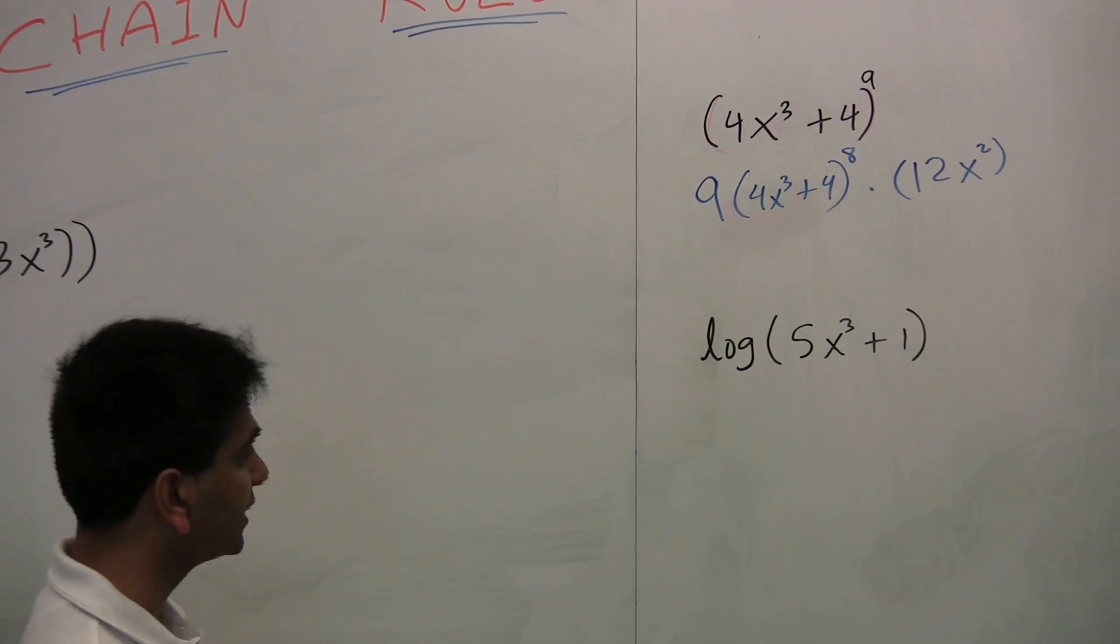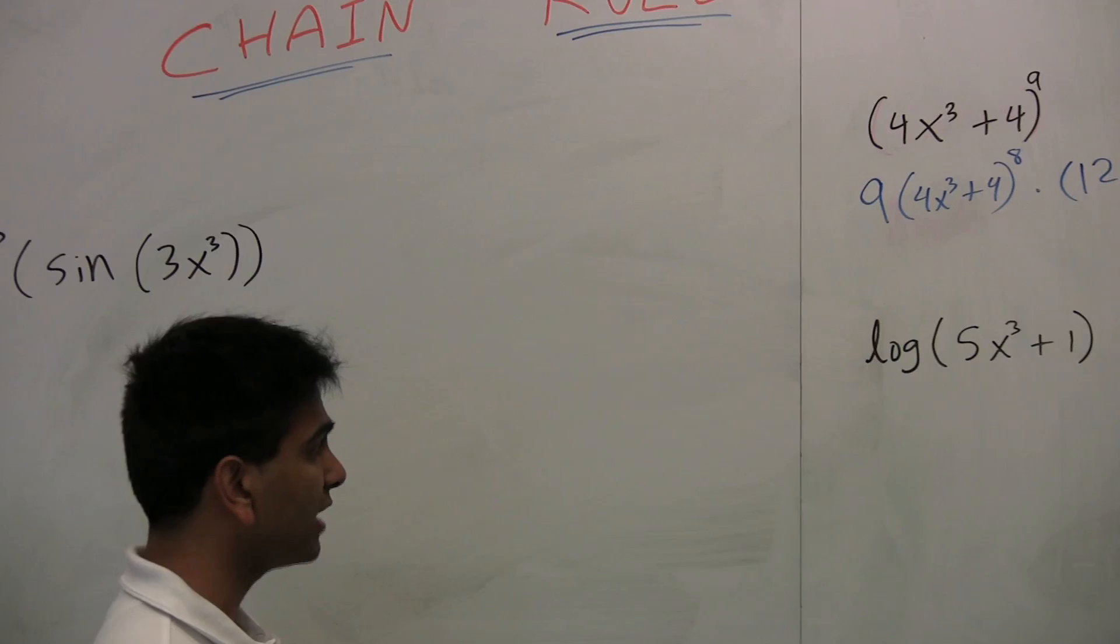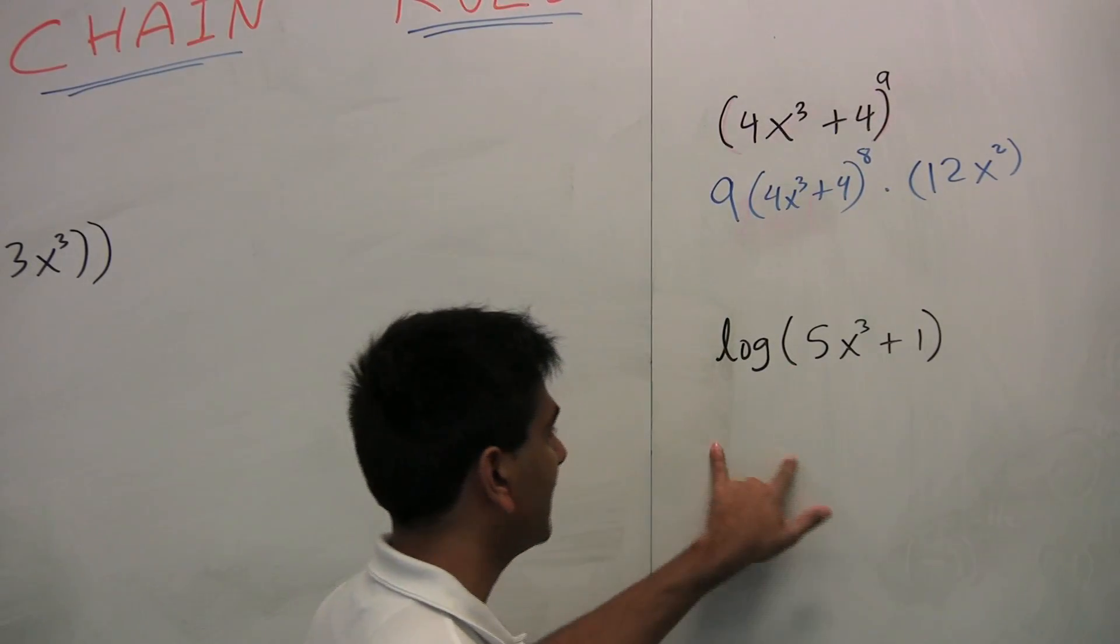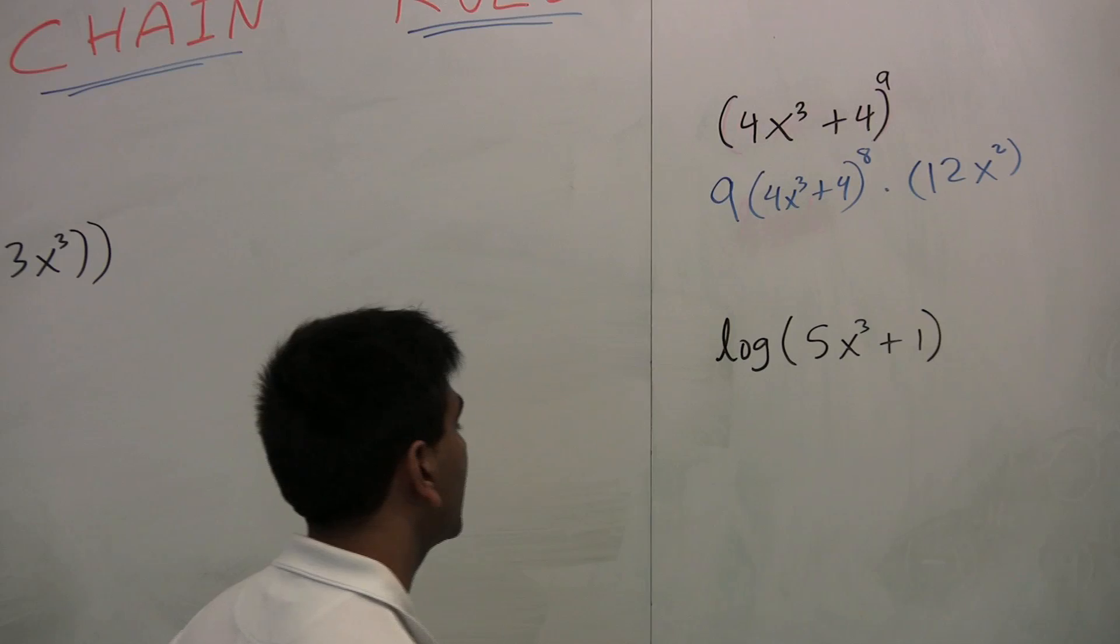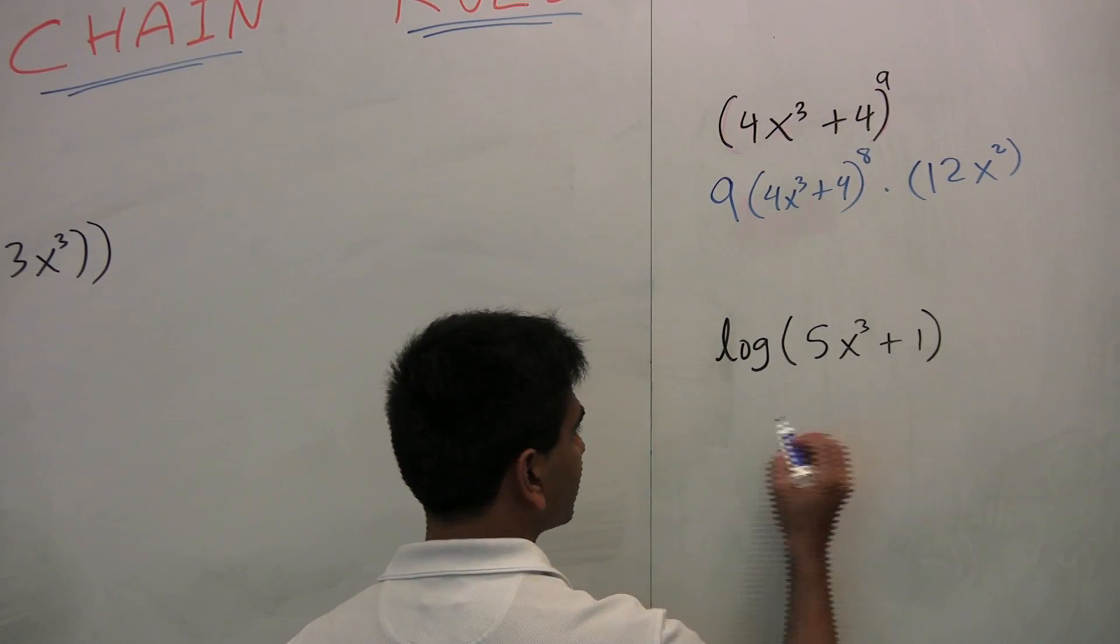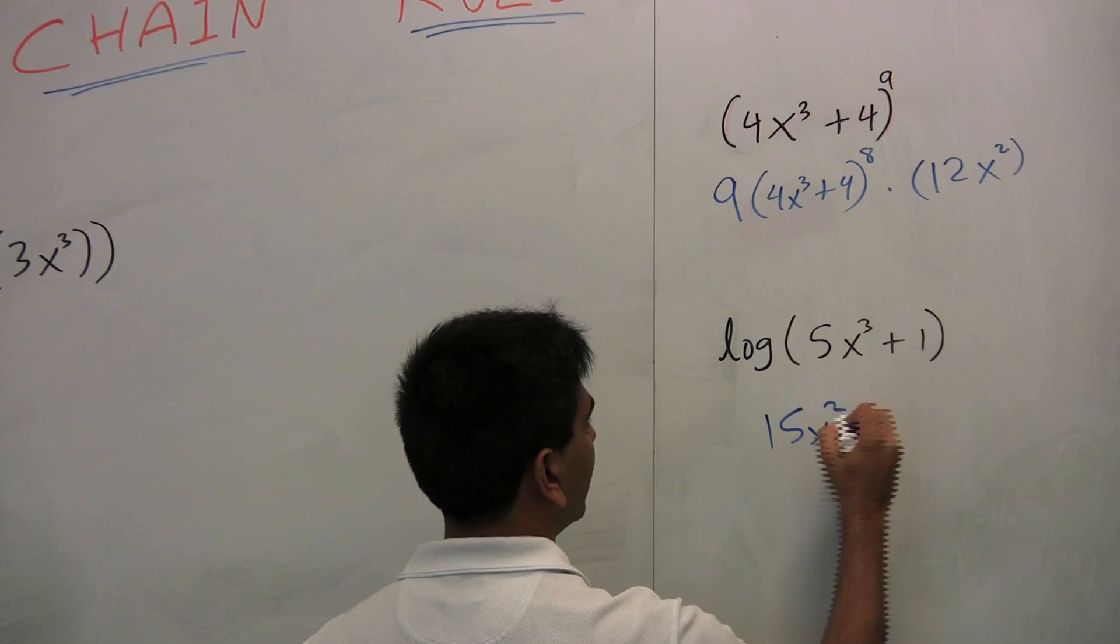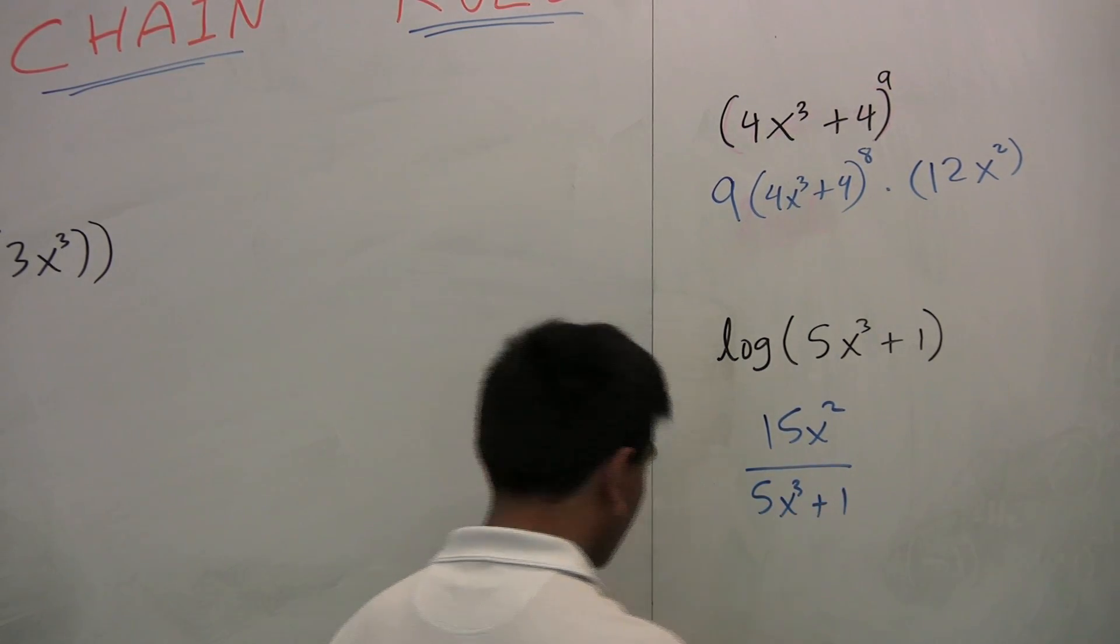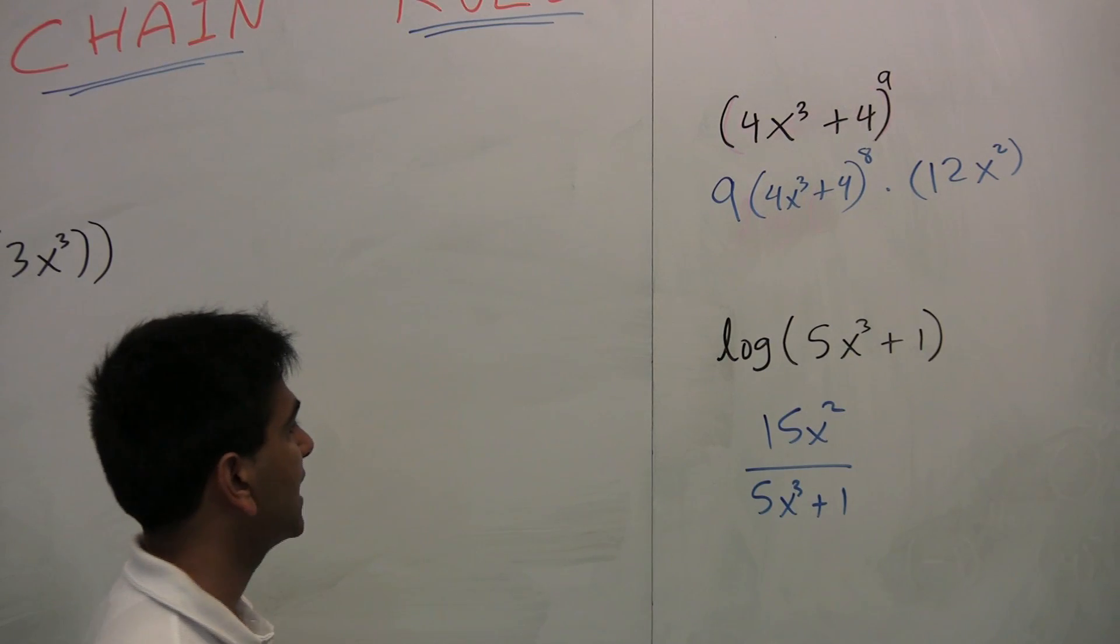Now let's look at this guy. Now we learned in the previous video that log functions, their derivative is just derivative of this guy divided by whatever is inside. So here, the derivative of this guy is 15x² divided by whatever is inside, so 5x³ + 1. So that's the derivative of this guy.